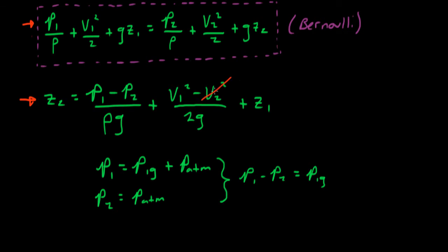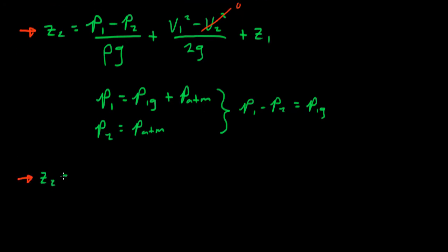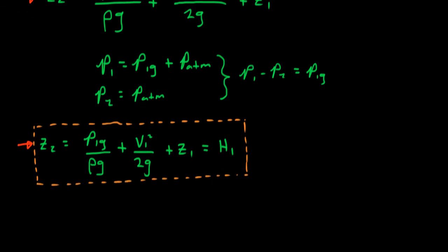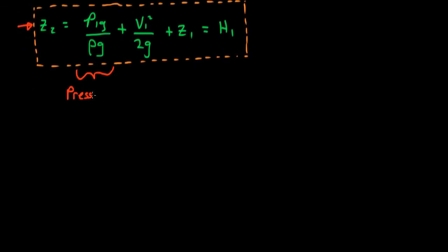Also, the velocity at station 2, where the fluid reaches its maximum height, is zero. Simplifying, we have the elevation at station 2 is equal to the gauge pressure at station 1 divided by the density times the acceleration due to gravity, plus the velocity at station 1 squared divided by 2 times the acceleration due to gravity, plus the elevation at station 1. By inspection, we see that the units of each term is a length. We call the elevation that the fluid could reach from a given state 1 the total head of the flow, h1. The head is a measure of the energy of the flow that can be computed at any flow station. The terms on the right-hand side represent the pressure head, the velocity head, and the elevation head of the flow at station 1.